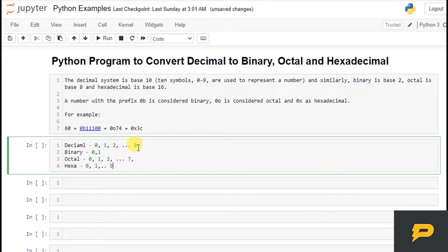Hexadecimal has 0 to 9 which are 10 numbers, and then A, B, C, D, E, F - 6 more numbers. So these are your hexadecimal numbers.